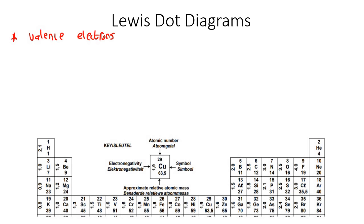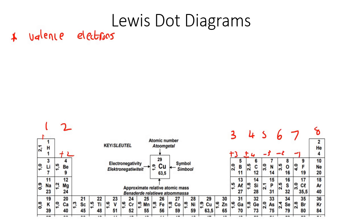To work out the number of valence electrons that an atom has, you just look at the group numbers: group one, group two, group three, group four, group five, group six, group seven, and group eight. We're not looking at plus one, plus two, plus three, minus three, minus two, minus one — that is valency, and that's not what we need when doing Lewis diagrams.